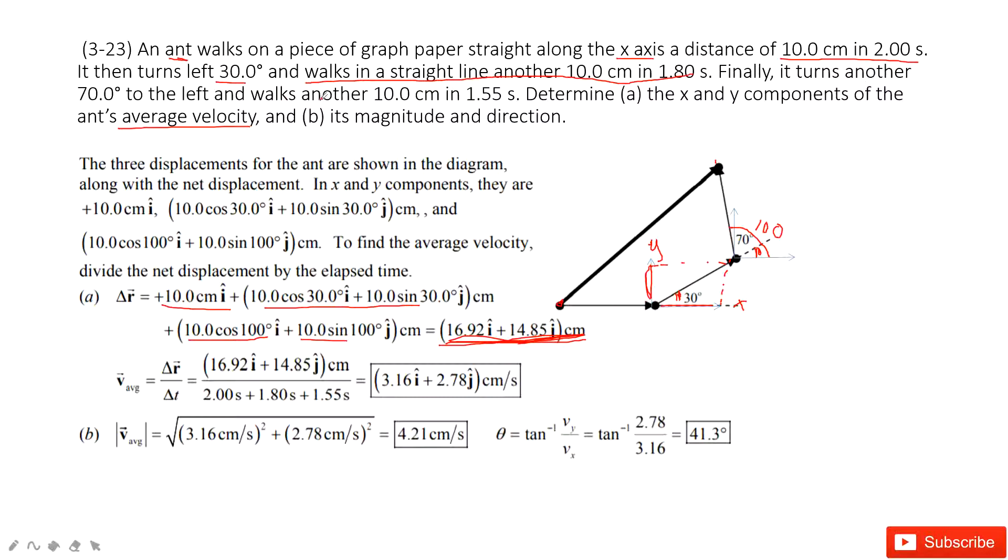Very easy. The first part, 2 seconds. The second part, 1.8 seconds. The third part, 1.55 seconds. Add them together, that's the total time taken. Then we can get the average velocity: displacement divided by time taken.